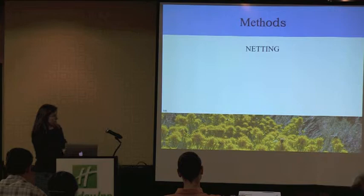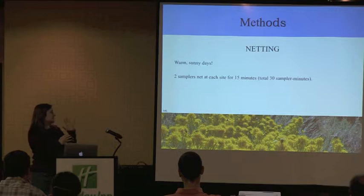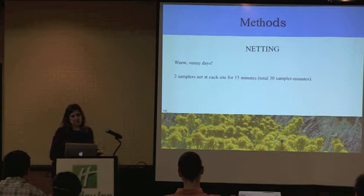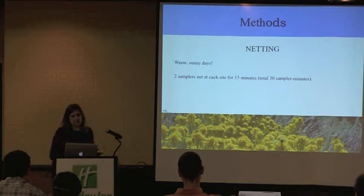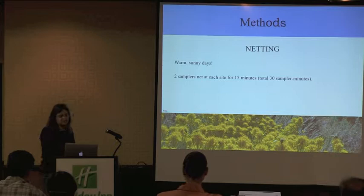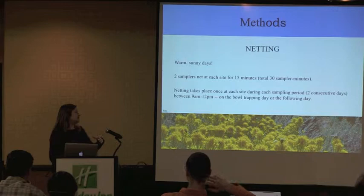Netting is the second component, also on warm sunny days only. Two samplers net at each site for 15 minutes, for a total of 30 sampler-minutes. This year I did sampling from 9 to noon; the protocol calls for an hour in the morning and an hour in the afternoon, which is a lot of netting — especially with 24 sites. The netting takes place at once at each site during each sampling period, and if the following day was also nice, we'd sample the remaining sites.